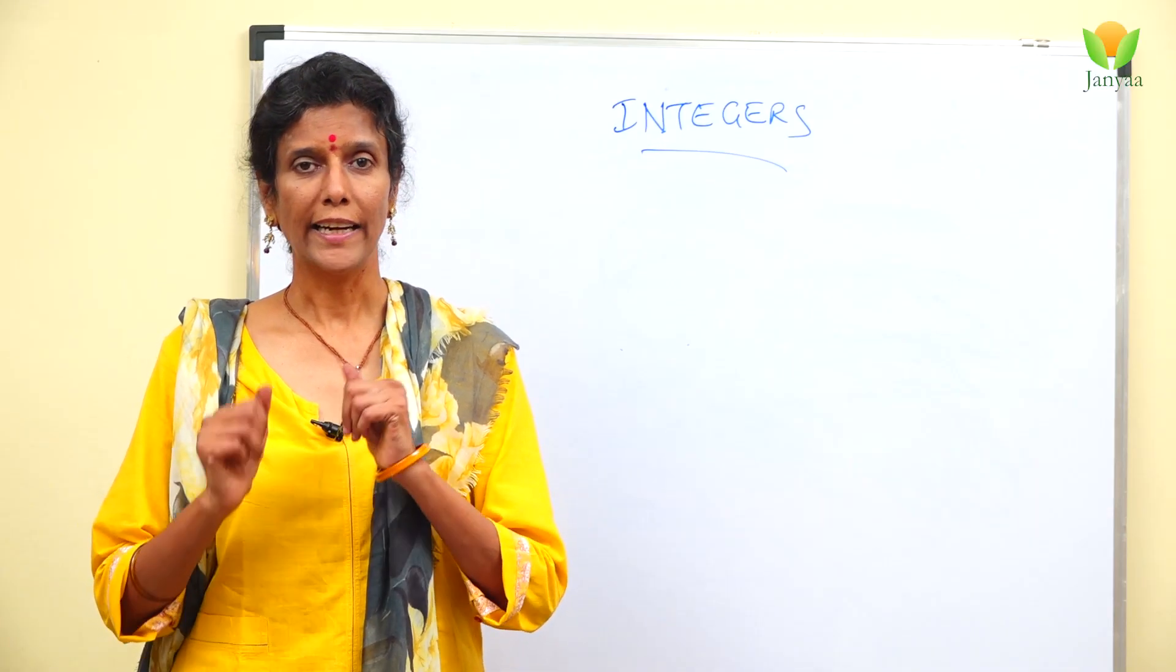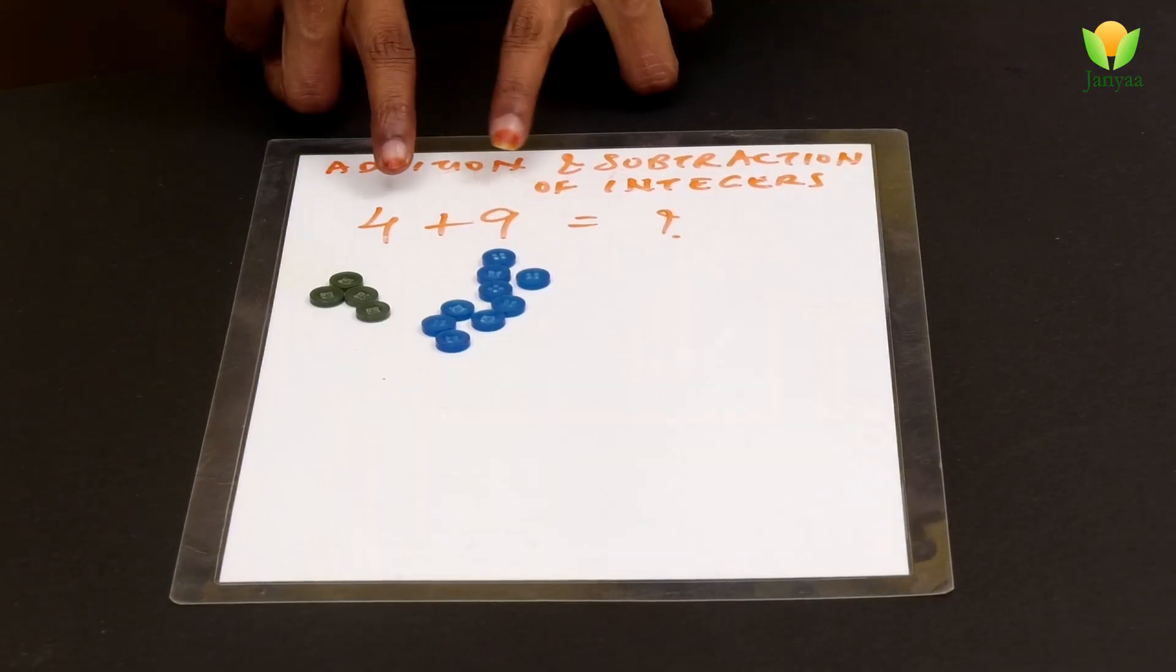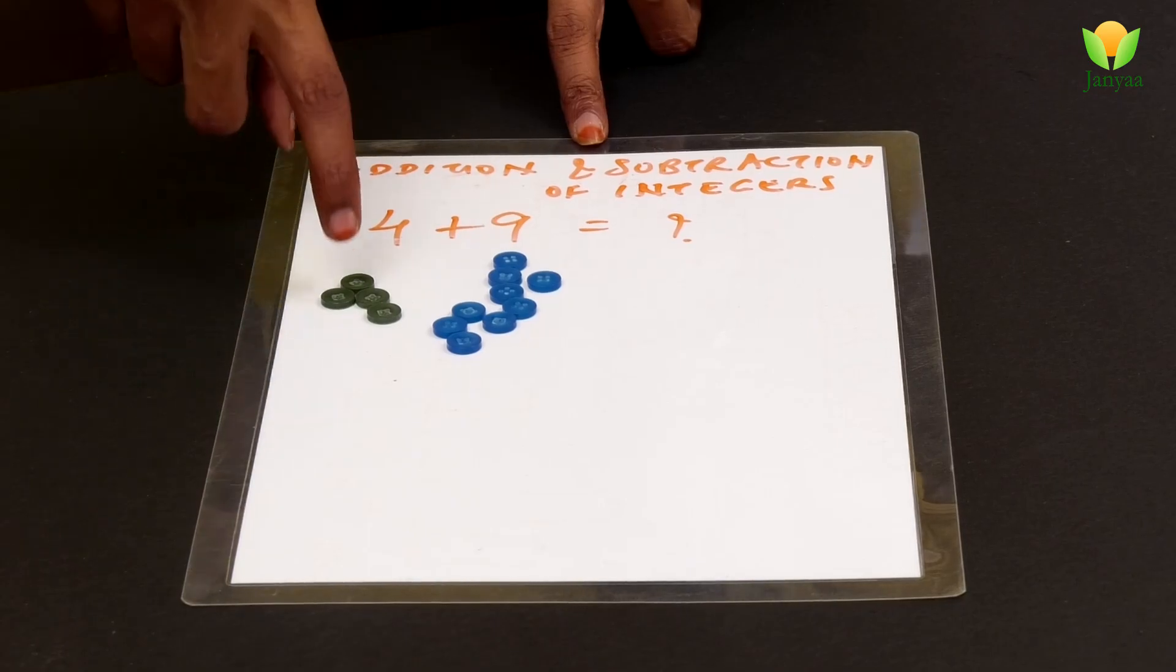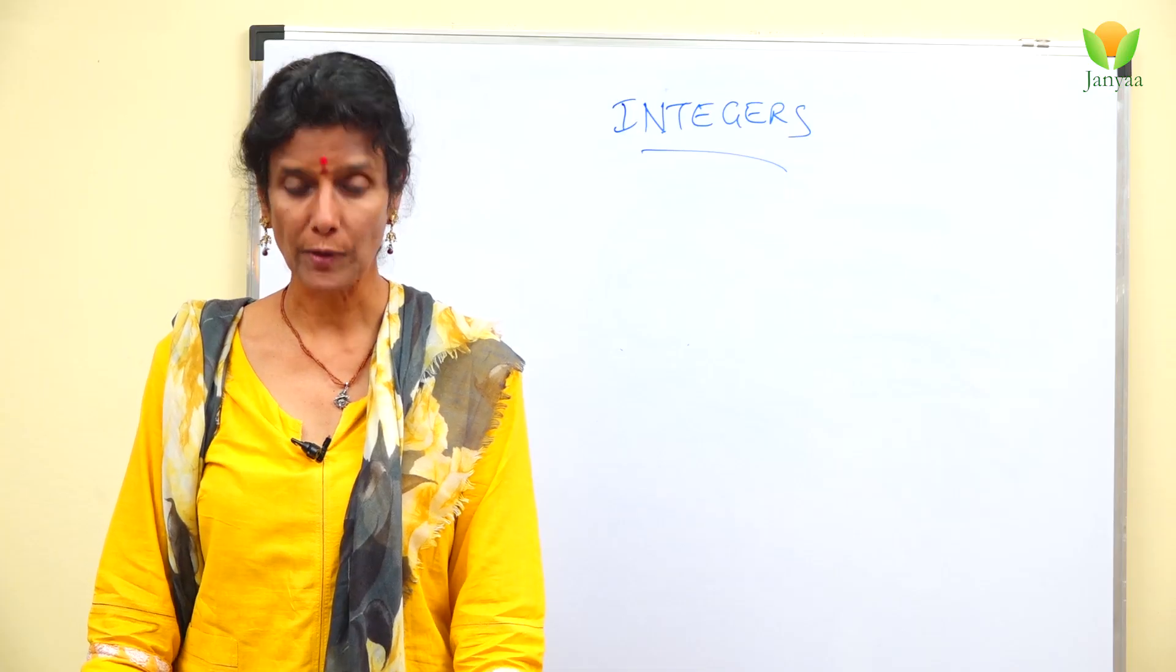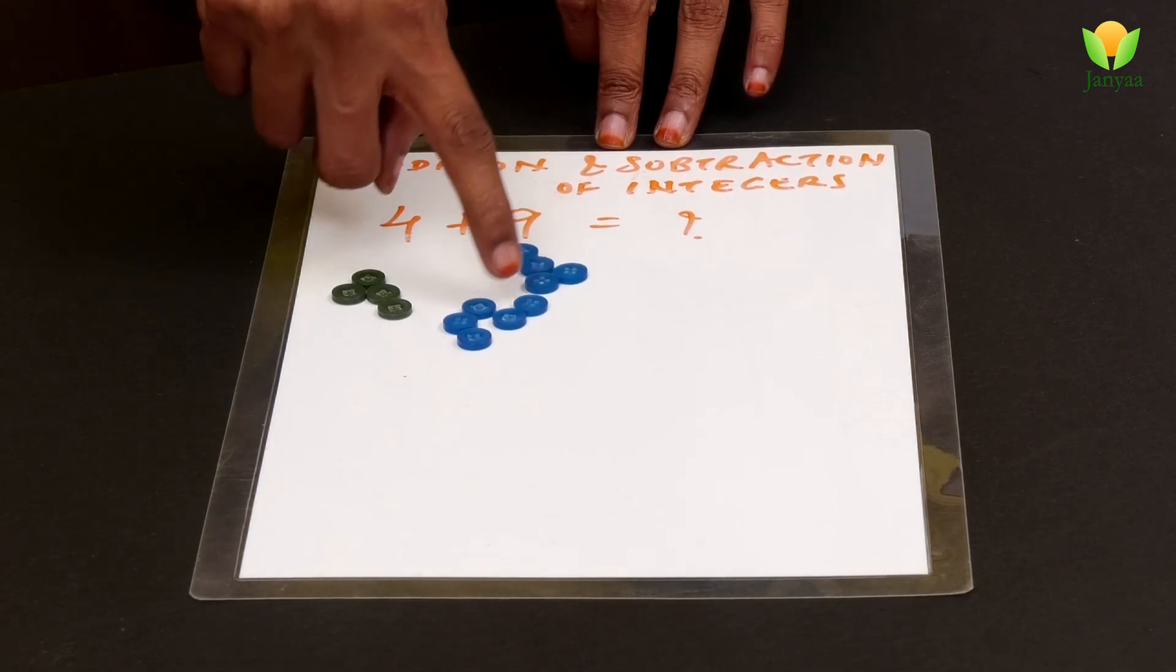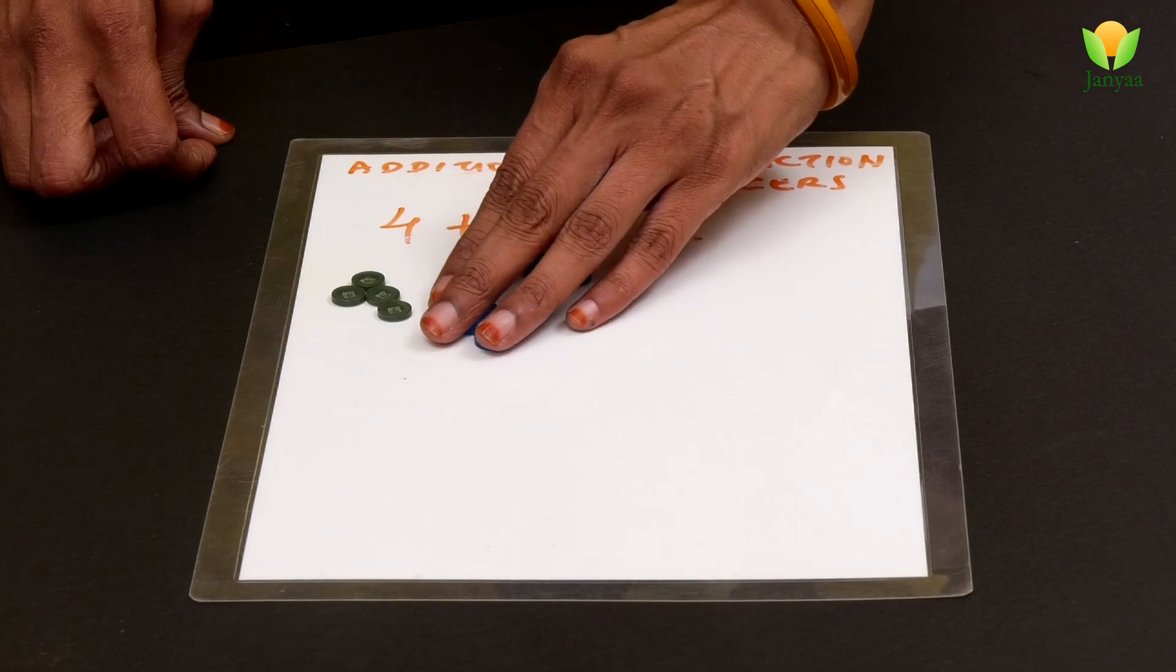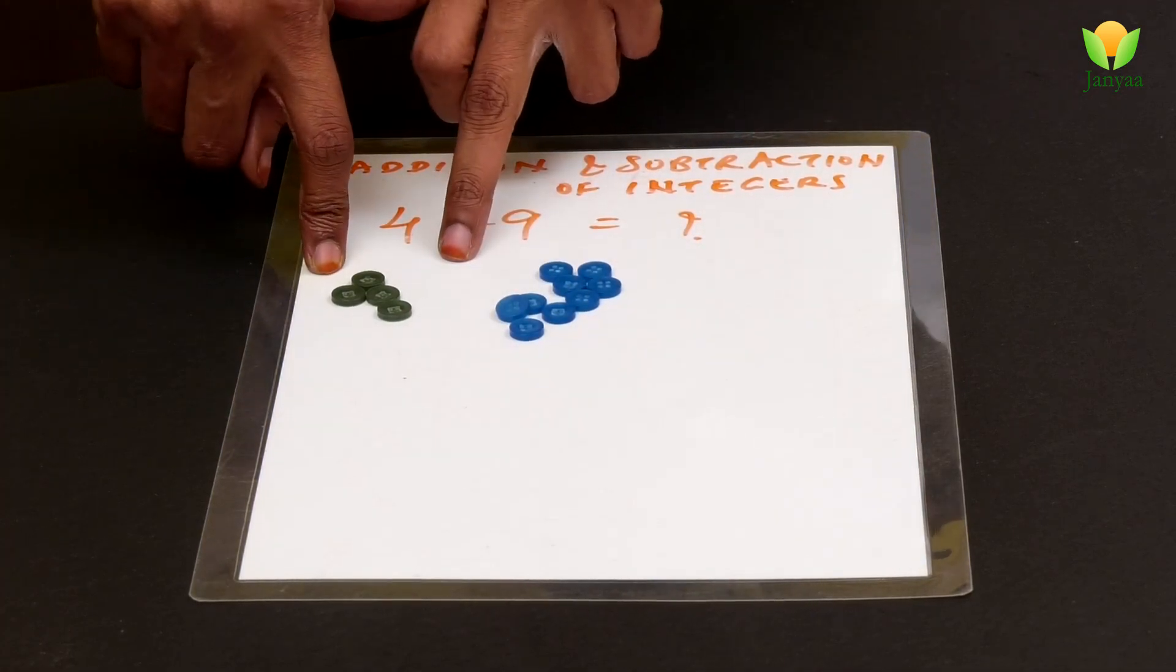Now let's learn addition and subtraction of integers. Here we have 4 plus 9. I'm going to teach you this with buttons - we have 4 green buttons and 9 blue buttons. If you want to add them, let's say we have 9 and you want to add 4 to it.